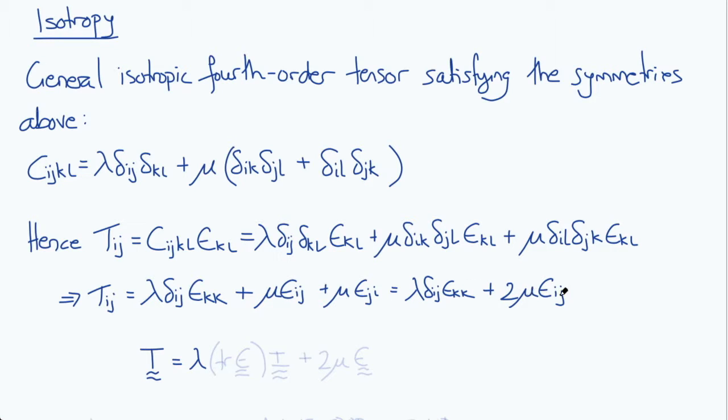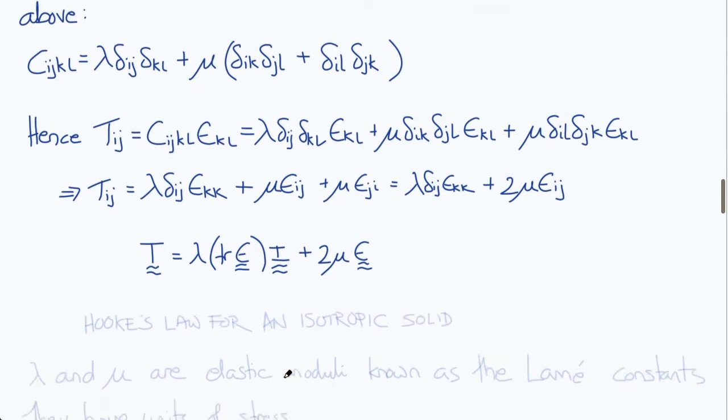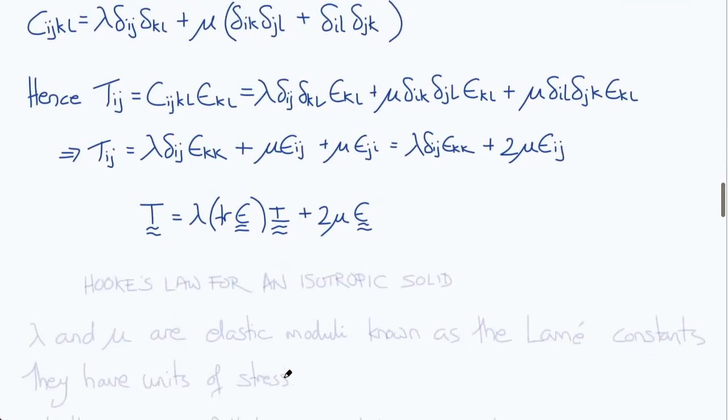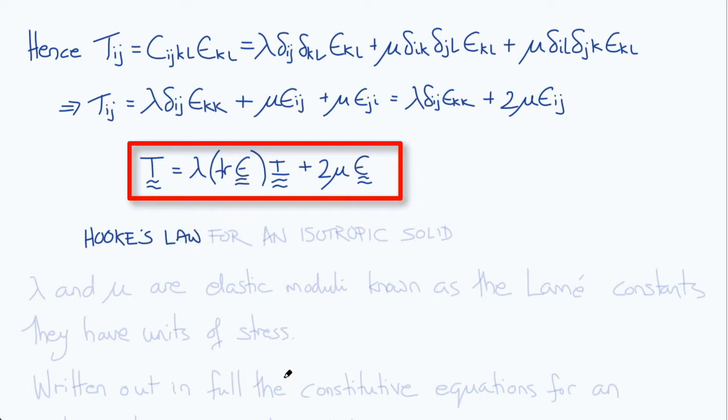Writing this in direct notation, the stress in an isotropic Hookean elastic solid is lambda times the trace of ε times I, the identity tensor, plus 2mu times epsilon. So this is Hooke's law for an isotropic elastic solid.